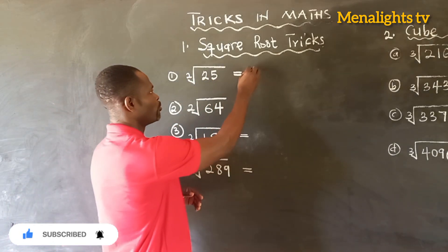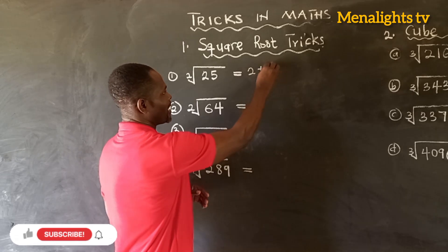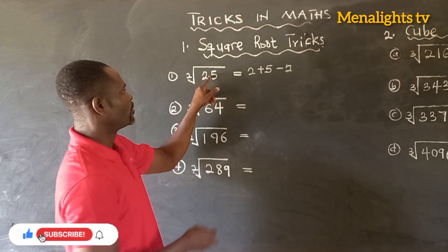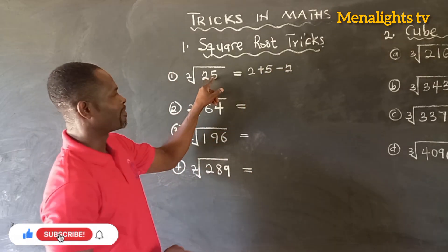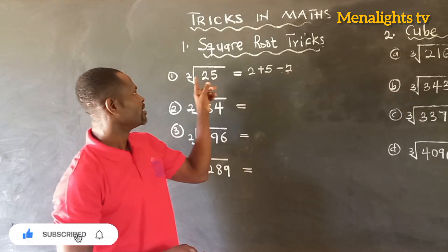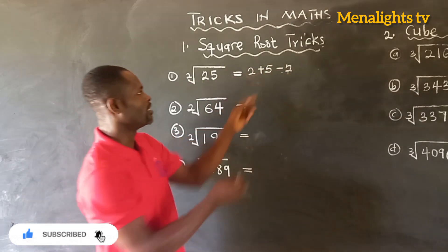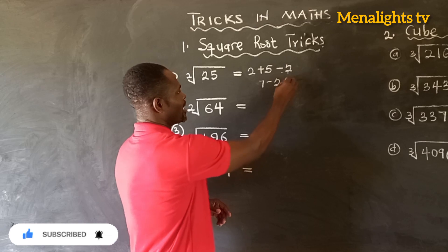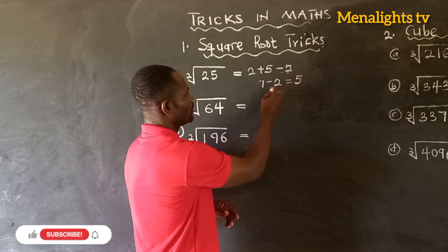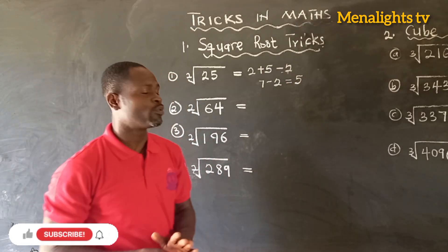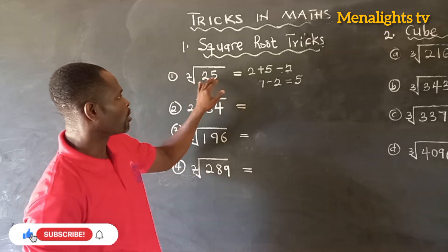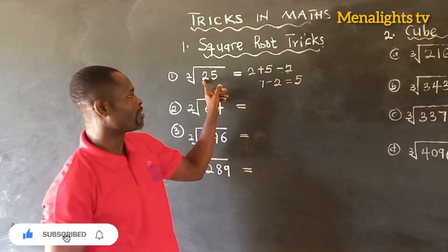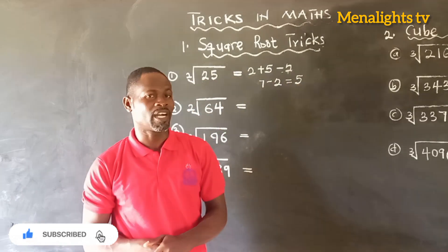So we have 2 plus 5 minus the 2. This 2 plus 5 minus the 2 that we have here — this will be 7 minus 2, and that will give us 5. Which means that the square root of 25 is 5.